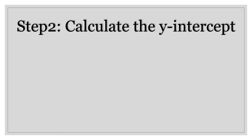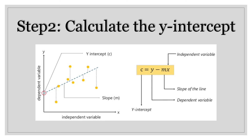The second step is to calculate the y-intercept. The y-intercept is the point on the line that meets your y-axis, as you can see in this figure. Calculating y-intercept is also easy — all you have to do is substitute the values of x, y, and m in this equation: c equals y-bar minus m times x-bar, and you will get your y-intercept.